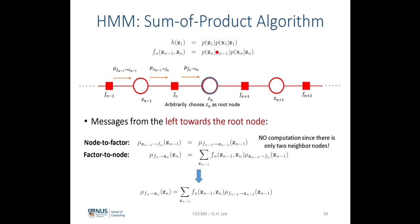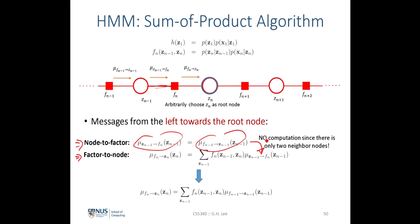We can see that the inference of this linear chain factor graph can be done using the sum-product algorithm. Interestingly, the node-to-factor message — for example, mu of z_{n-1} to f — is negligible, meaning we don't have to compute it at all, because it's directly equal to the message coming into the node. The reason is that there is only one other neighbor connected to z_{n-1} besides the link to this factor, so we only need to look at the factor-to-node computation.